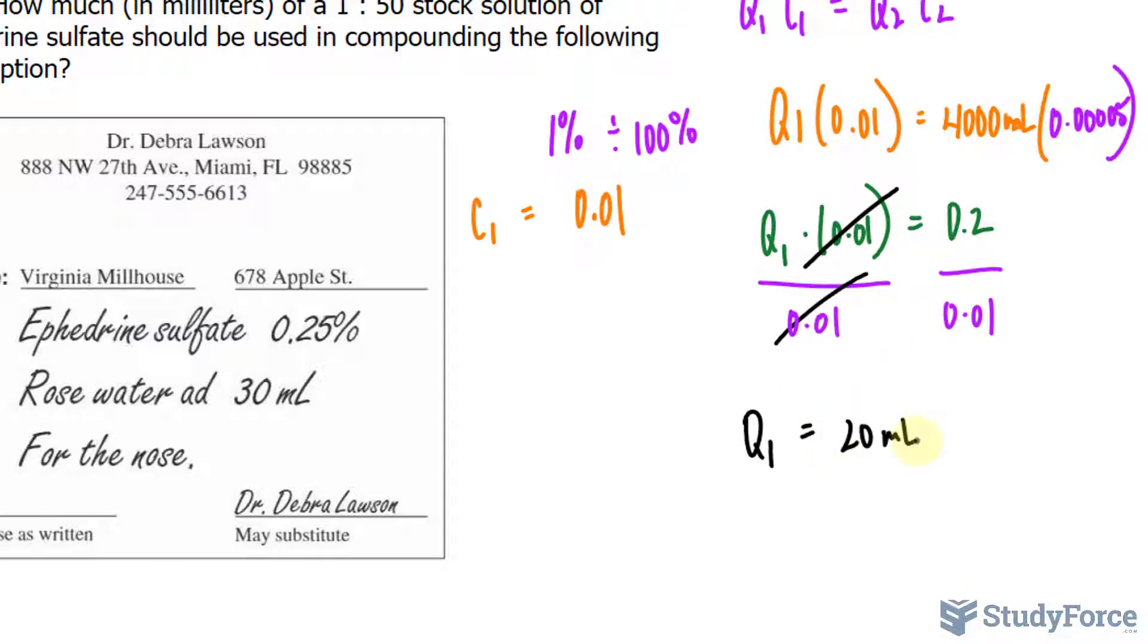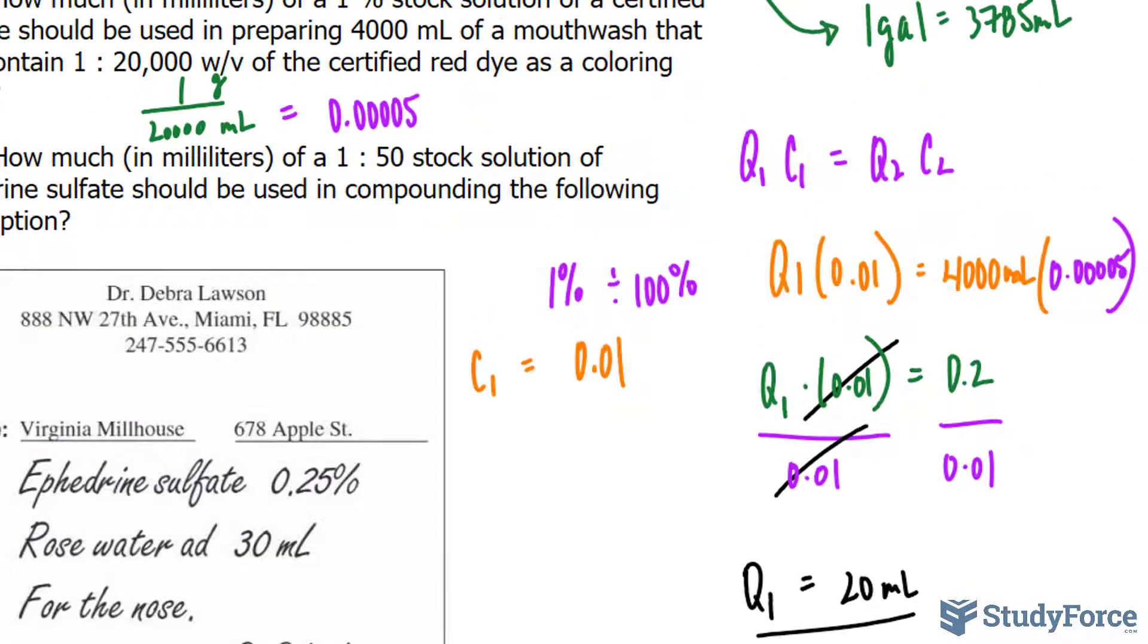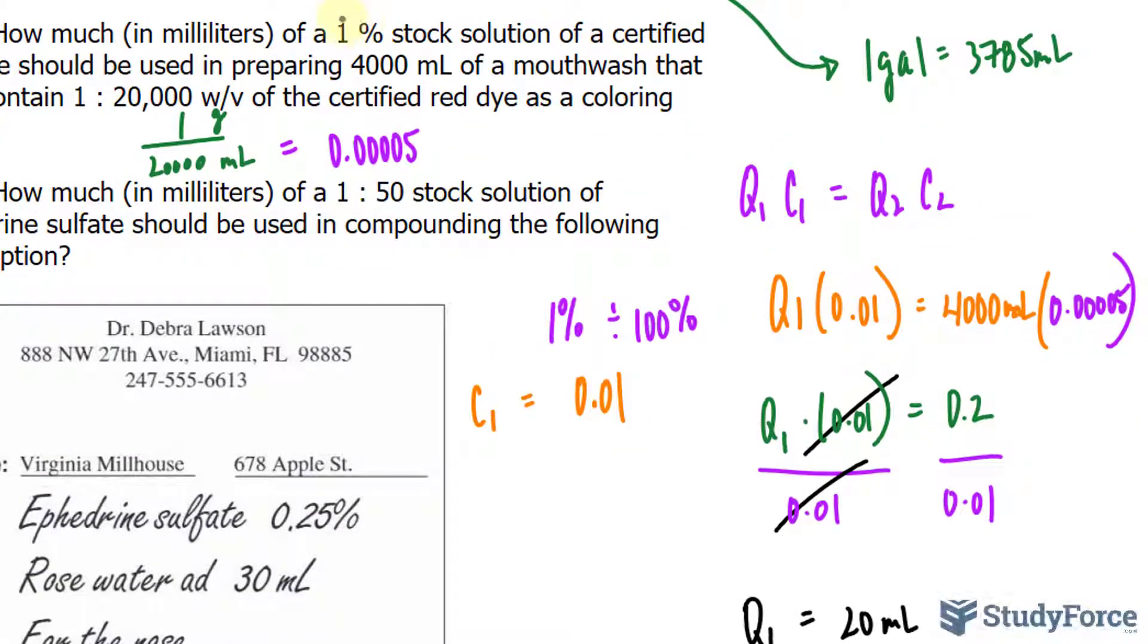So to help you interpret this, the stock solution will need to be 20 milliliters at this percentage in order for you to prepare the final solution of 4,000 milliliters at that concentration.